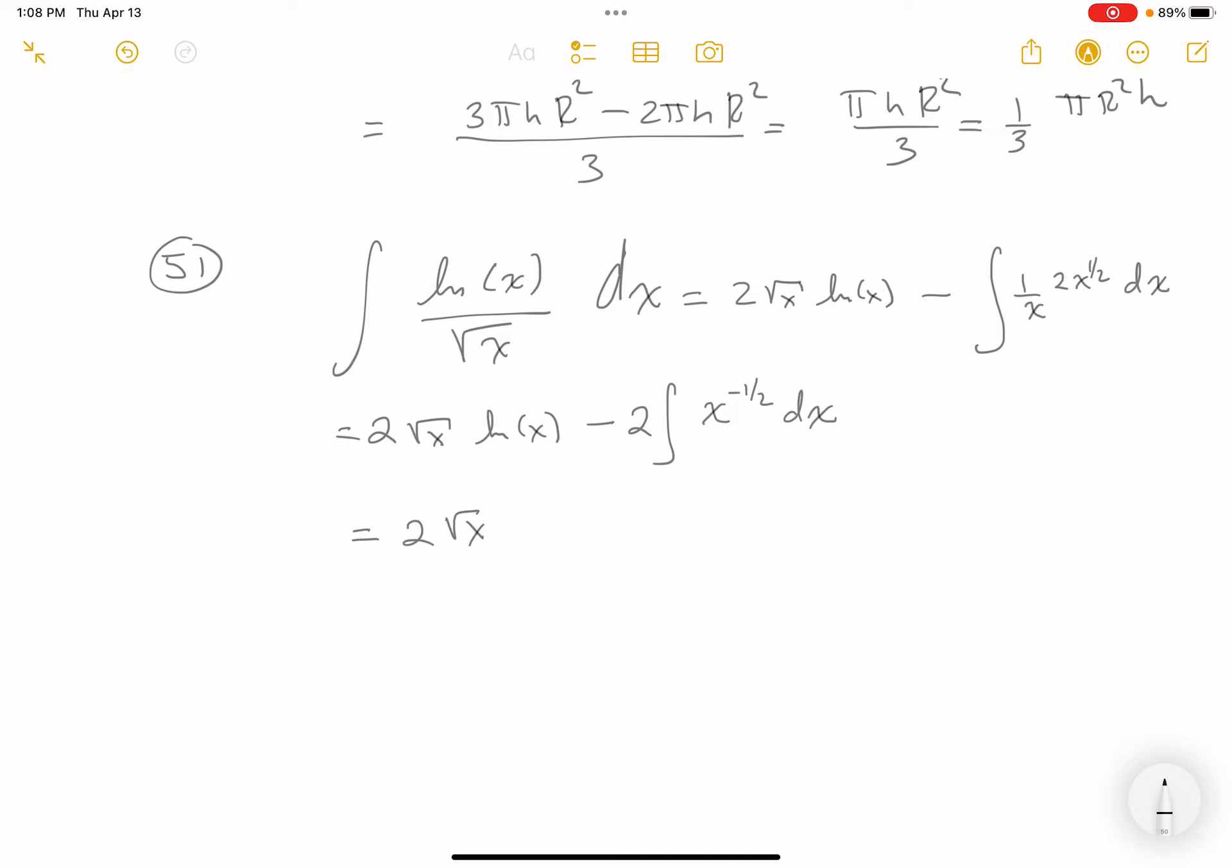2 root x natural log of x, and that's going to be minus 2. I'm going to increase the x one up by 1—that would give me 1/2—I'm going to divide by 1/2, like multiplying by 2, and then plus c. Let me clean it up a little bit: 2 root x natural log of x minus 4 root x plus c. Put a box in that, commit to the answer.